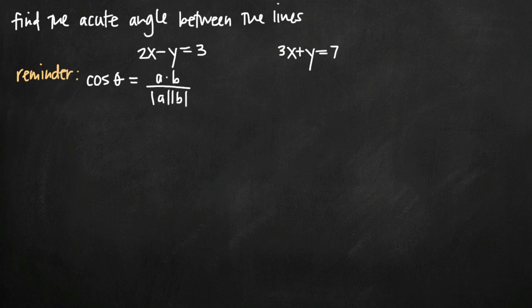Today we're going to be talking about how to find the acute angle between two lines. In this particular problem we've been given equations of two lines: 2x minus y equals 3 is one of them, and 3x plus y equals 7 is the other. What we want to do is find the acute angle between these two lines.